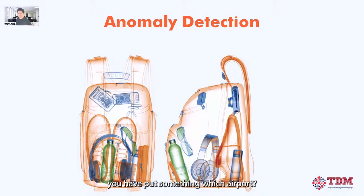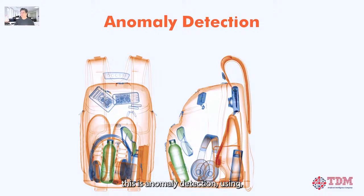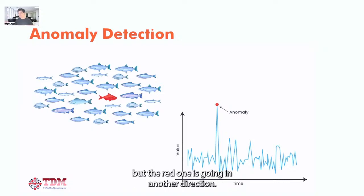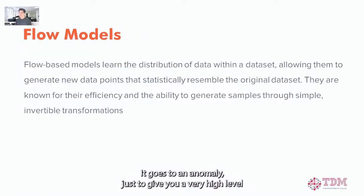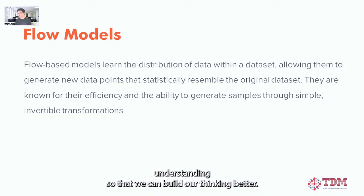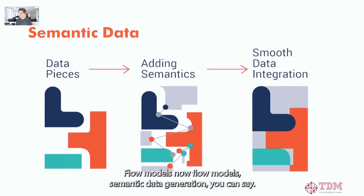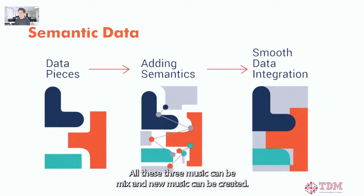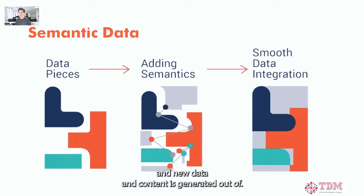Variational autoencoder models: the best way to explain — at an airport, their system detects your bag needs to be rechecked. This is anomaly detection using variational autoencoder models. It can detect something out of place — like if fish are going in one direction but the red one goes another direction, that's an anomaly. Flow models are for semantic data generation. Like mixing piano, guitar, and drum to create new music — that is semantic data generation: adding semantics, smoothing integration, and new content is generated out of it.